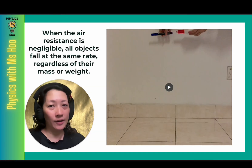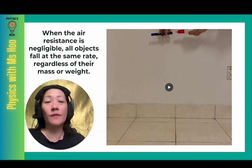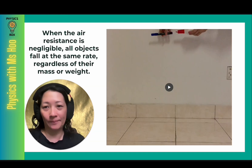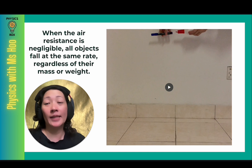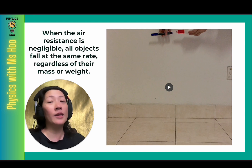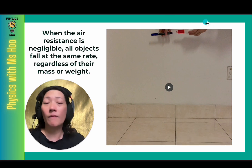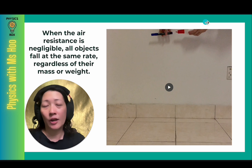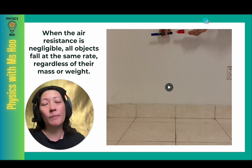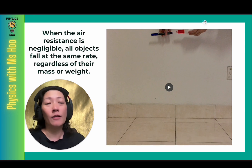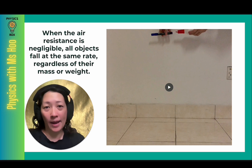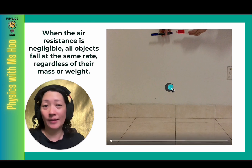I have a video here where I have dropped two objects from the same height at the same time. You'll find that when the air resistance is negligible, they will all fall at the same rate regardless of their mass or weight. These two objects are a marker pen and a bottle of glue. Obviously, the bottle of glue is heavier, so most people would assume the heavier object will fall more quickly. Now let's watch what happens.